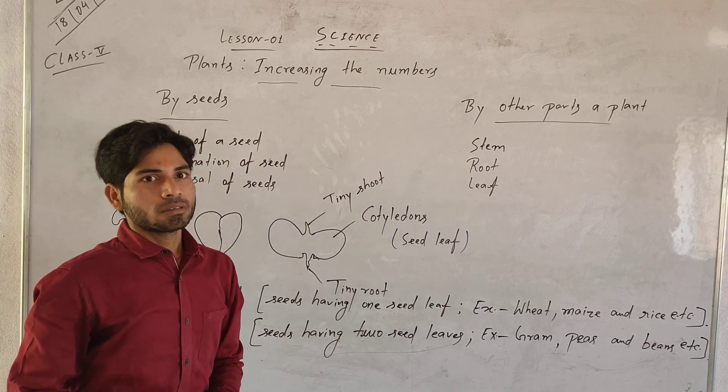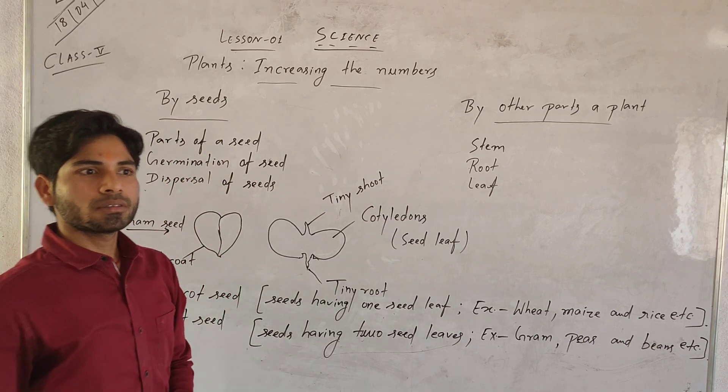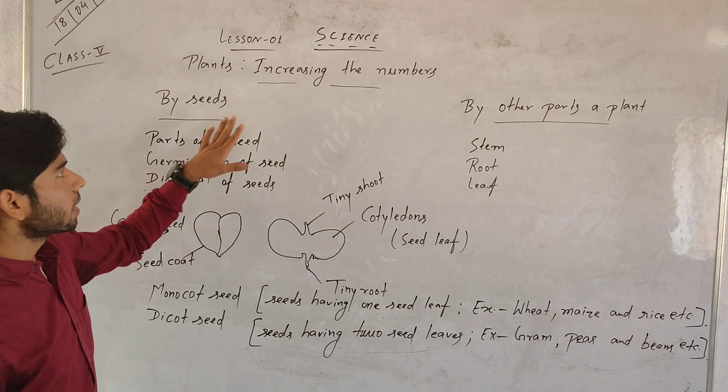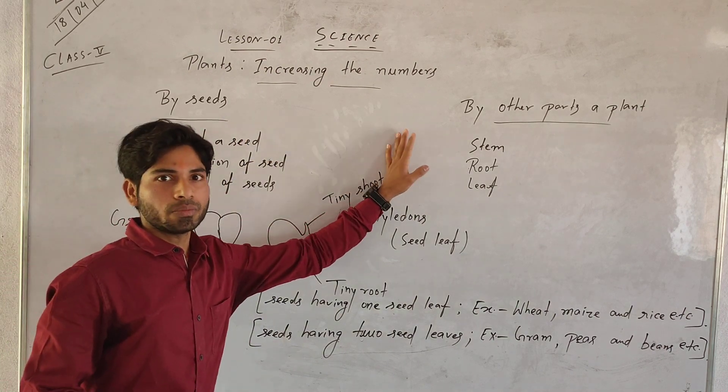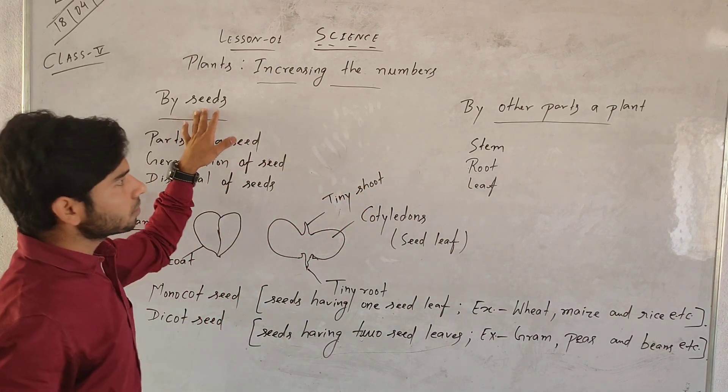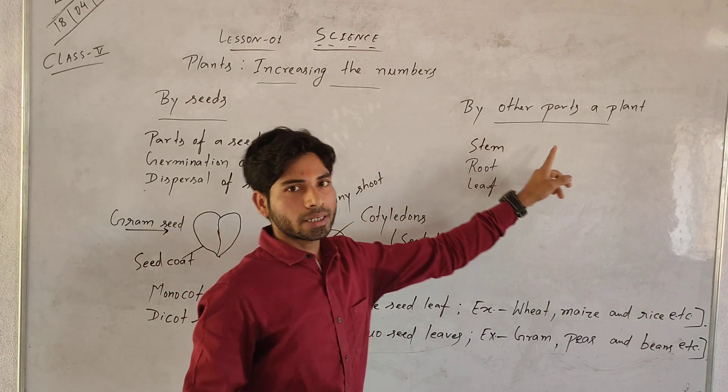So, there are two types by which plants can increase in their numbers: by seeds or by other parts of the plant.